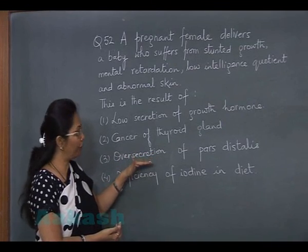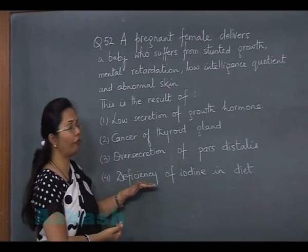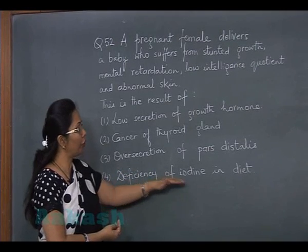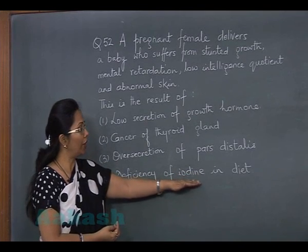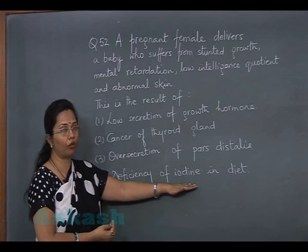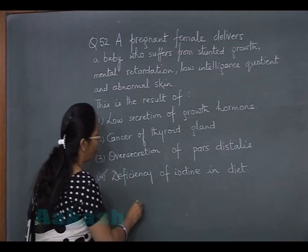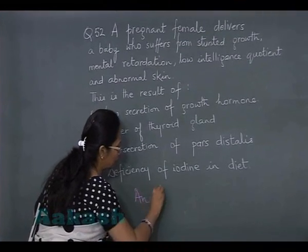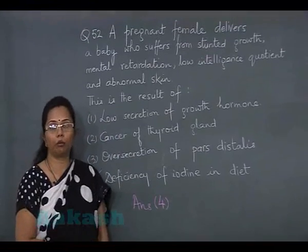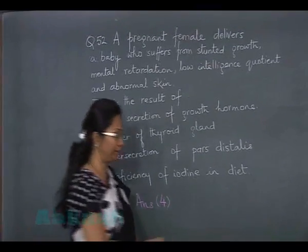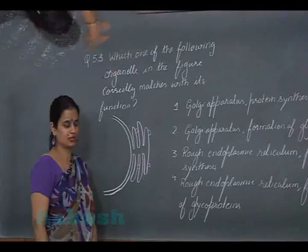Option 3 has nothing to do with the development of the fetus. Option 4: deficiency of iodine in the diet. Due to iodine deficiency, thyroxine cannot be properly formed, and due to the deficiency of thyroxine these conditions will appear. So our answer is option 4.